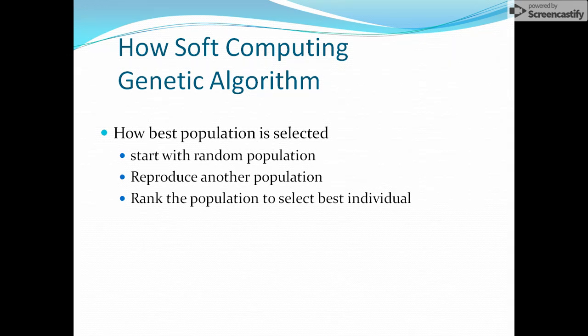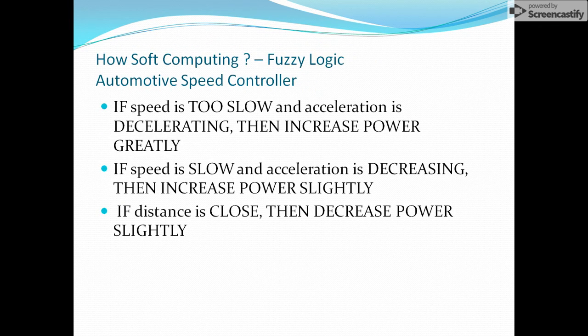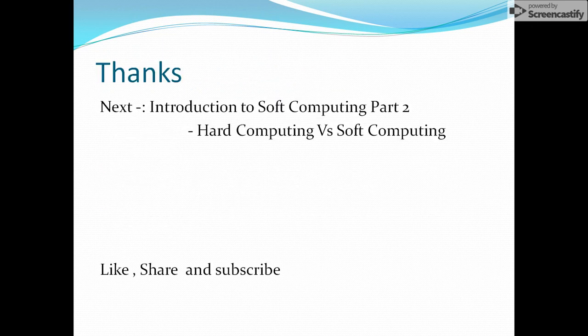For fuzzy logic as another component of soft computing, consider an automatic speed controller. There will be speed parameters like 'too slow,' 'slow,' 'close,' and so on. According to these specific parameters, the vehicle normally controls its speed. We are not giving any specific measurement like 20 km/h, 10 km/h, or 30 km/h — the specific parameters are fuzzy: 'too slow,' 'slow,' 'close,' and so on.